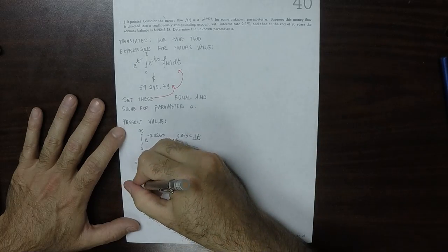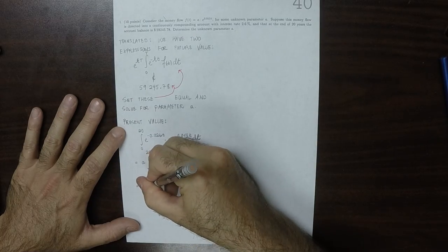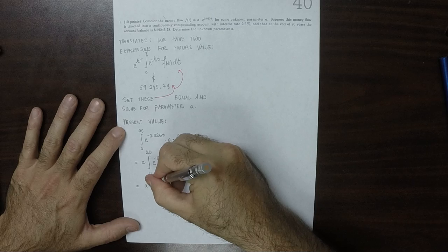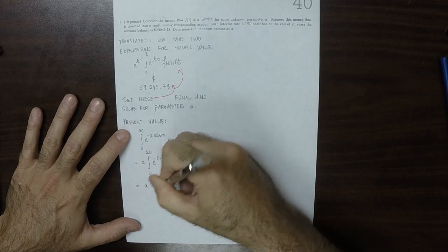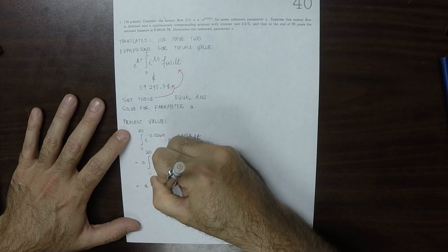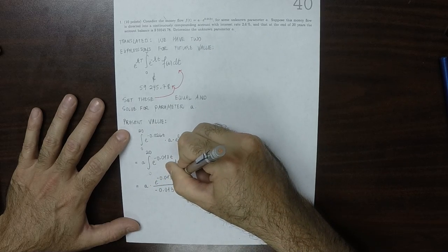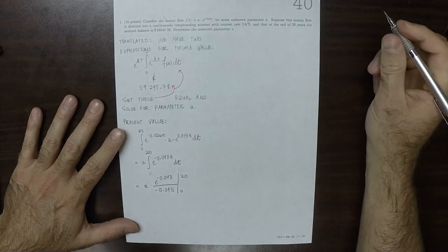Okay. So then, that would be A multiplied by exponential negative 0.013, divided by negative 0.013, from 0 to 20.